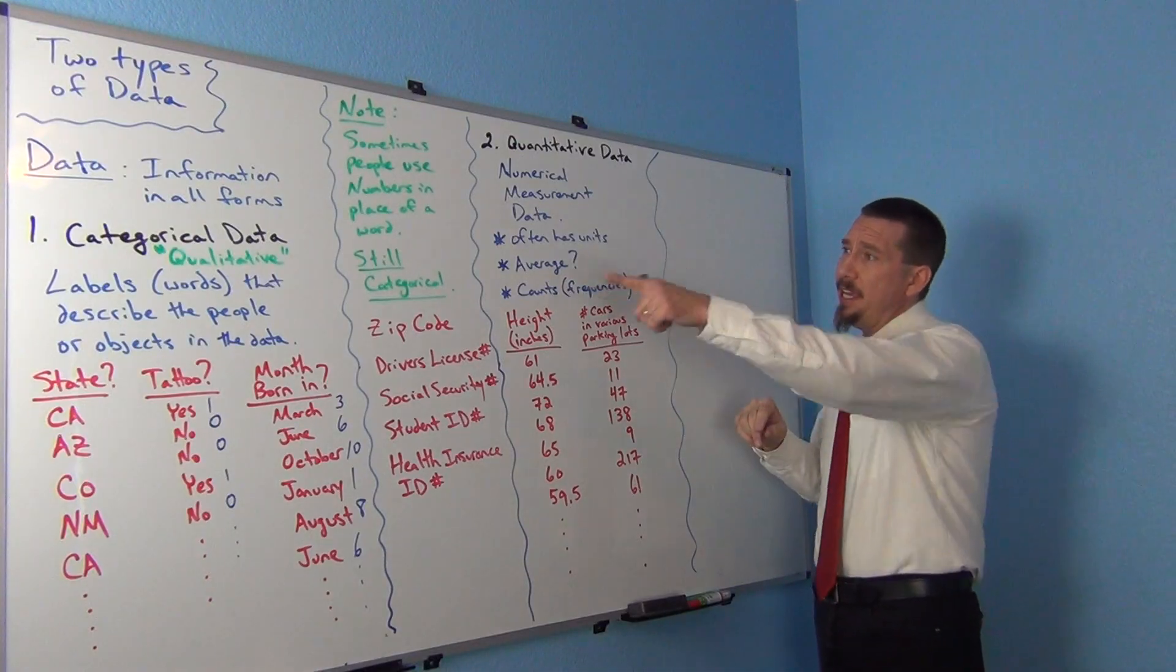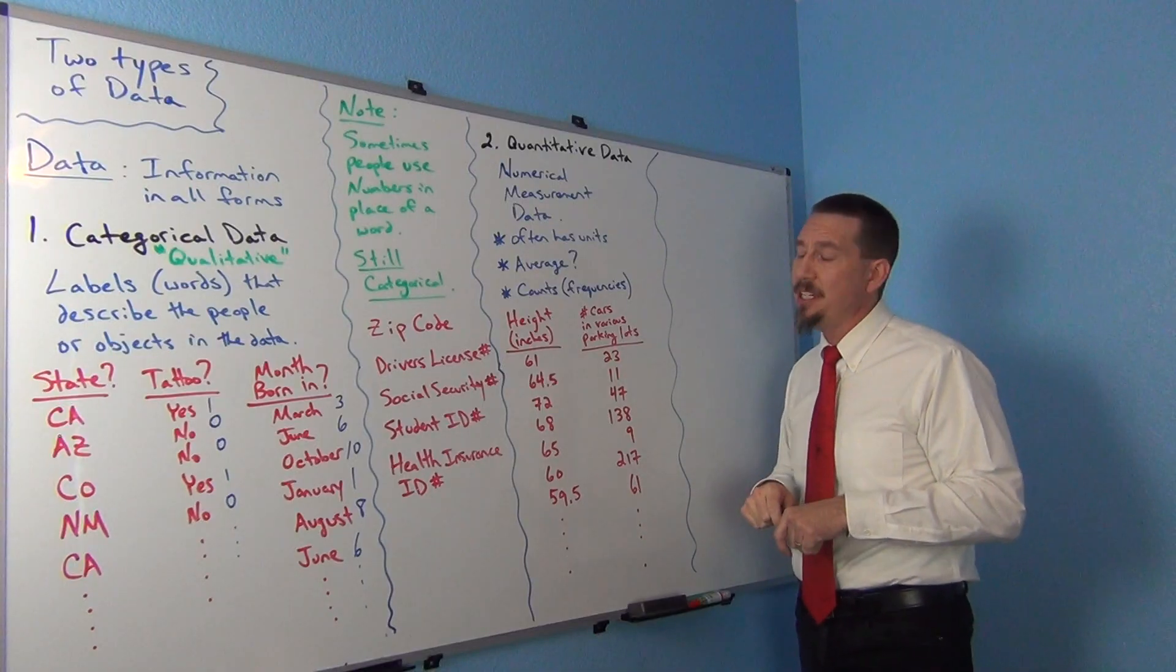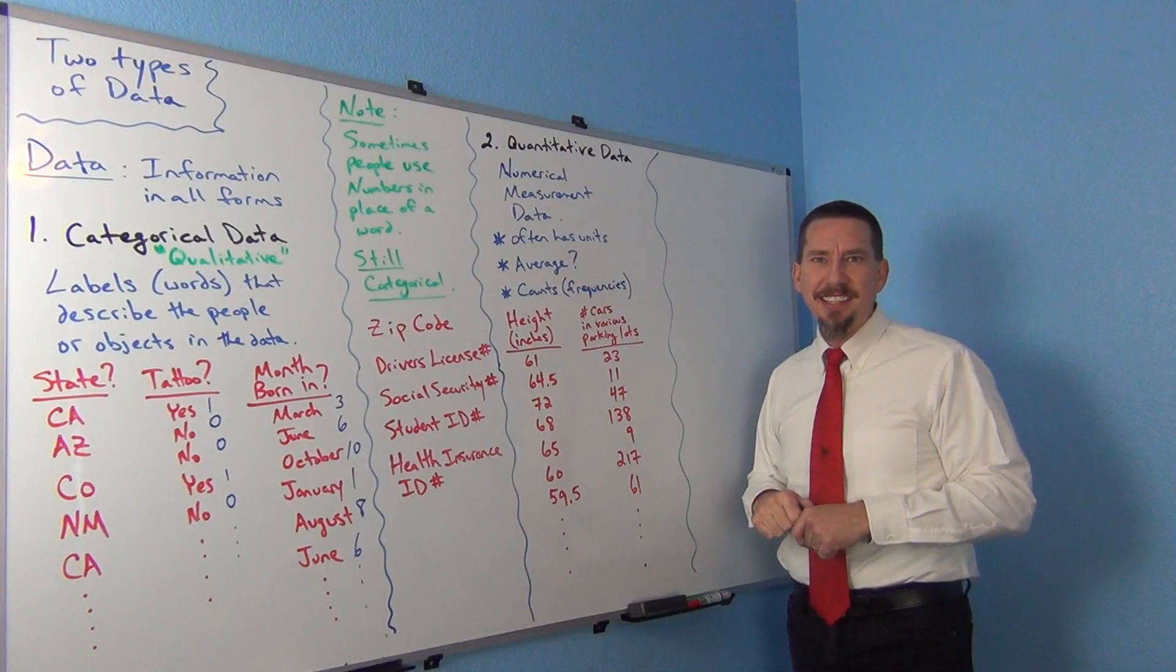So two types of data. Categorical data and quantitative data. Make sure you can tell the difference. That's really important. Alright? So this is Matt Tesho and Intro Stats. And I will see you next time.